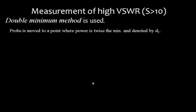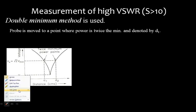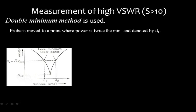When the VSWR is greater than 10, covering the complete range with the simple method becomes difficult. In this case, we use the double minimum method. Instead of measuring V maxima and V minima directly, we measure two half-power points. In terms of dB, this is 3 dB down; in terms of voltage, it is root-two times the minimum. The distance between the two points where the voltage equals root-two times V minimum defines the two half-power points.